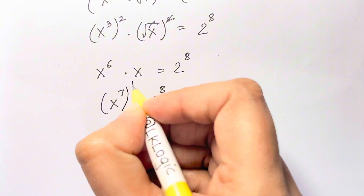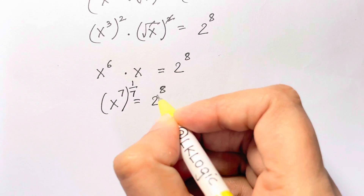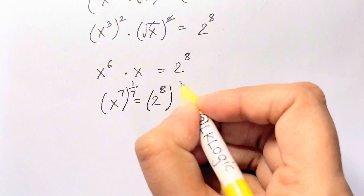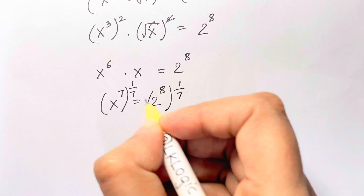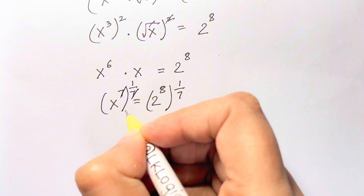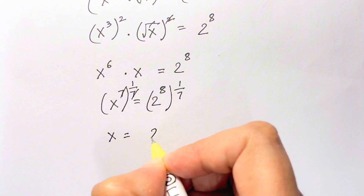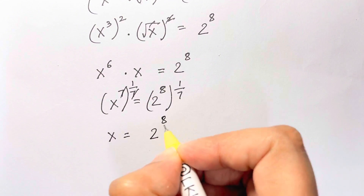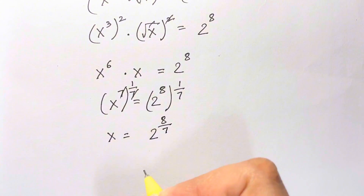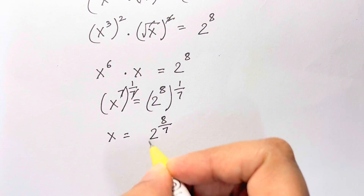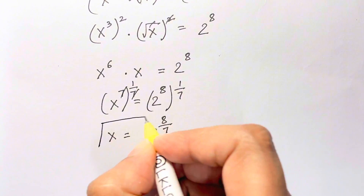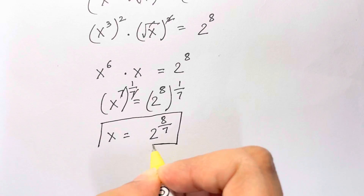Now we take the 1 over 7 power on both sides. The 7 and 7 get cancelled, so we are left with x equals 2 to the 8 over 7. We've got the value of x.